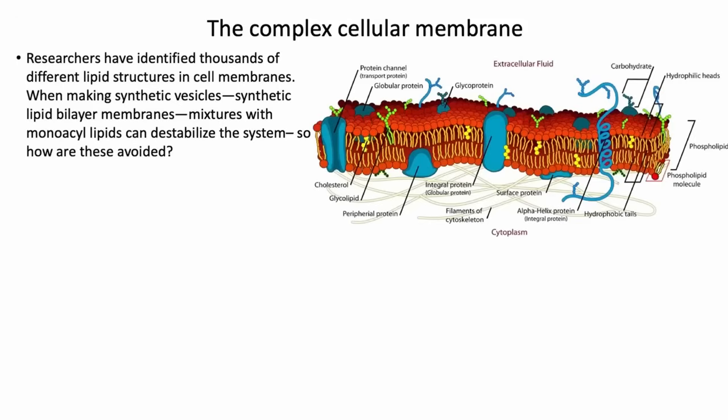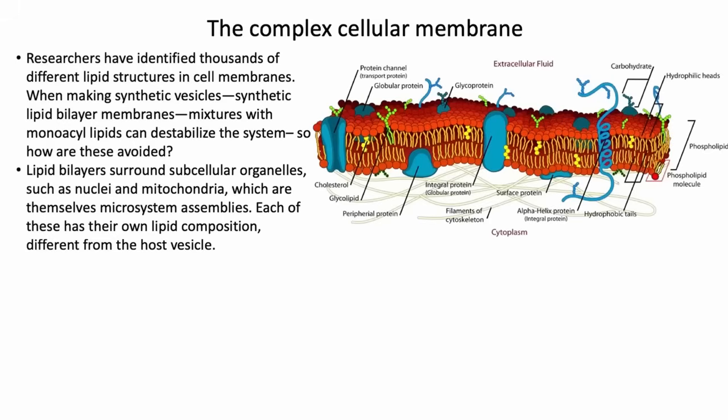Mixtures of monoacyl lipids destabilize the system, so when they have their monoacyl lipids, those will destabilize the systems — you can't use those. Lipid bilayers surround subcellular organelles such as nuclei and mitochondria, which are themselves microsystem assemblies. Each of these has their own lipid composition. So this is a lipid bilayer.